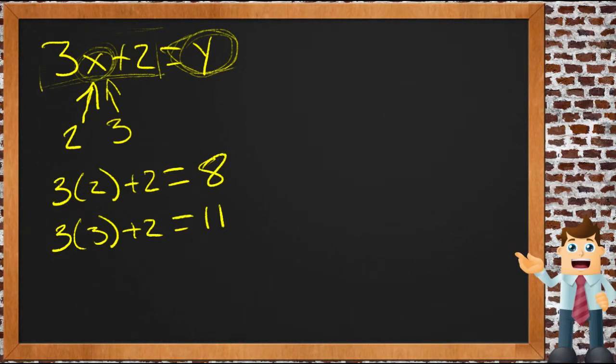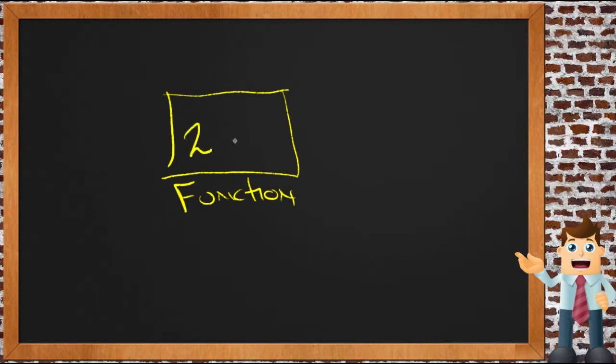Let's see if we can take a look at the analogy of a box. Let's use a box here. We're going to call this box our function. And in this function, anything we put in here gets multiplied by 2, and then we add 3.